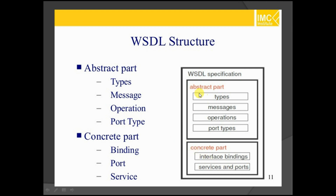The abstract part contains types, messages, operations, and port types. There are two types of operations: one-way communication and request-response communication.